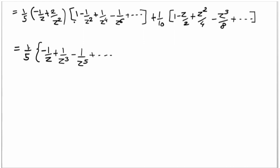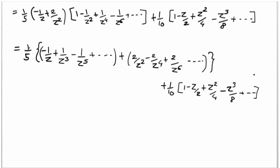Then multiply 2/z² to get -2/z² + 2/z⁴ - 2/z⁶ + .... The next term is (1/10)(1 - z/2 + z²/4 - z³/8 + ...). This is the Taylor's or Laurent's expansion.